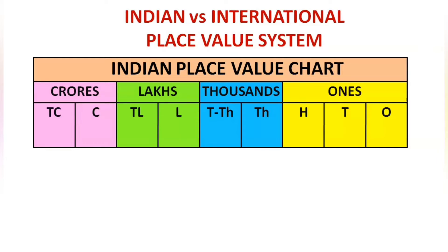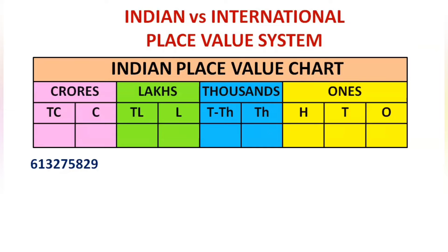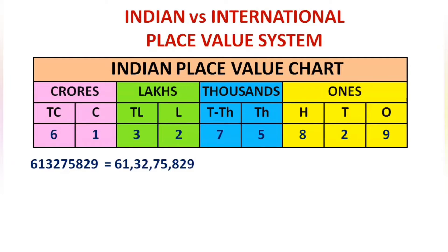Now let us see how to name the number 613,275,829 in the Indian place value system. First, let us arrange all these digits in the places from right to left. Then let us place commas after every period, from right to left, like this.